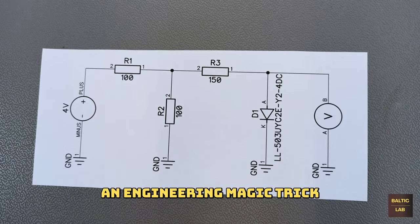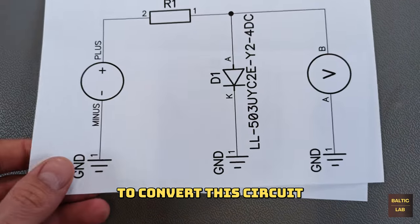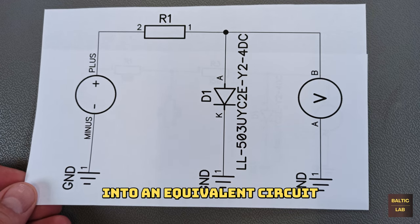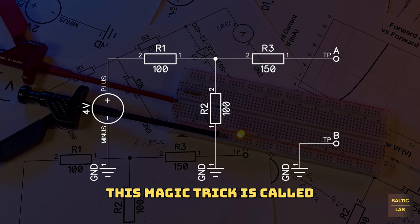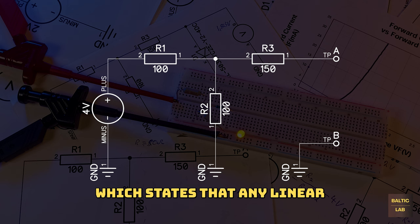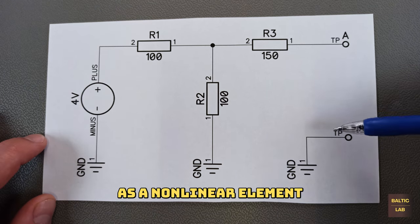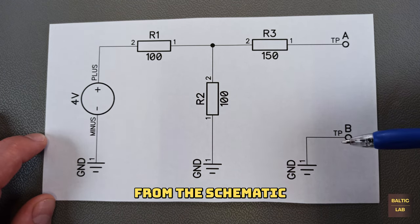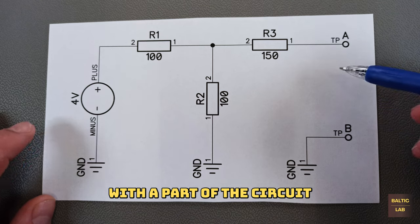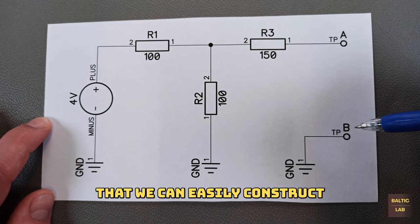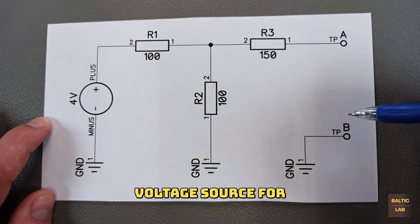Luckily there's an engineering magic trick that allows us to convert this circuit into an equivalent circuit like this. This magic trick is called Thevenin's Theorem which states that any linear electrical network that only contains voltage sources, current sources and resistances can be replaced by a single voltage source and a series resistance. After removing the diode as a non-linear element from the schematic, we are left with a part of the circuit that we can easily construct a Thevenin equivalent voltage source for.